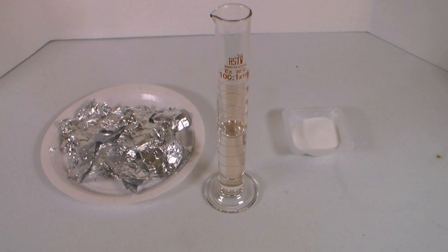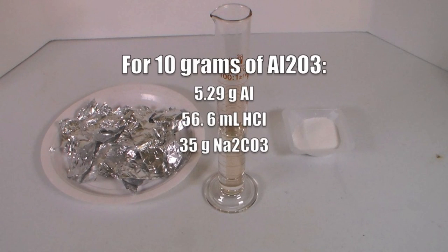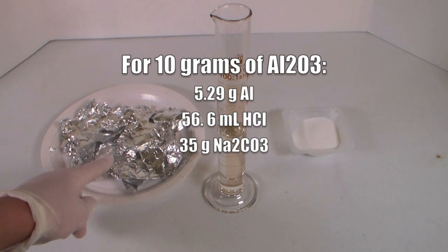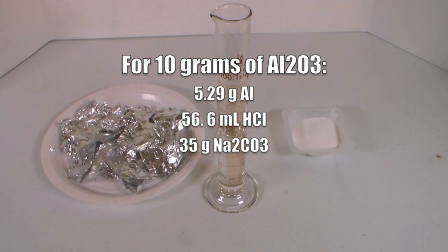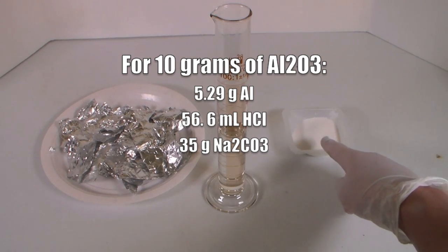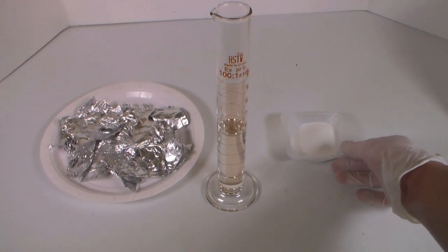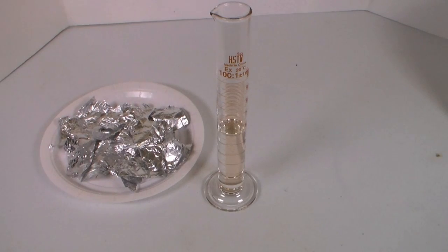Since I want to make 10 grams of Aluminum Oxide, I have measured out 5.29 grams of Aluminum Foil, 56.6 milliliters of 31.45% hydrochloric acid, and 35 grams of sodium carbonate. Put the sodium carbonate aside for now, since we won't need it in the first step.